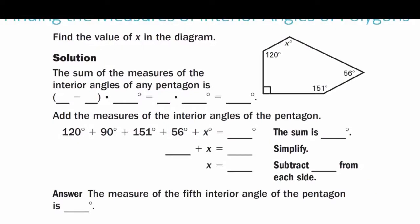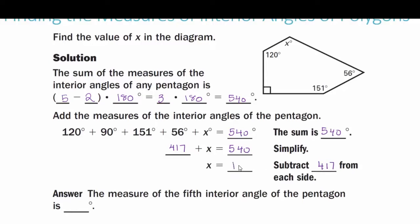Example 1: finding the measures of interior angles of polygons. We have to find the value of x in the diagram, which is a pentagon with five sides. First I need the total measure of interior angles: (5 − 2) × 180 = 3 × 180 = 540 degrees. Setting the sum of all angles equal to 540: 120 + 90 + 151 + 56 + x = 540. That simplifies to 417 + x = 540. Subtracting 417 from both sides gives x = 123 degrees.